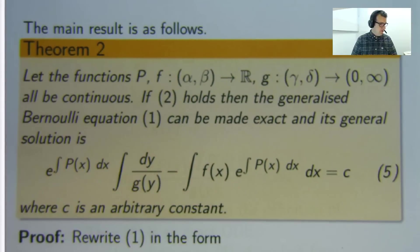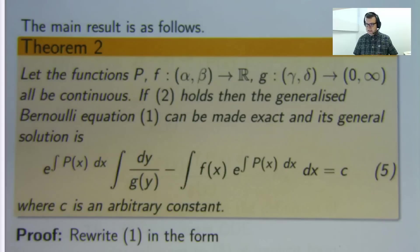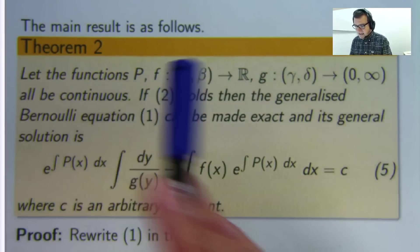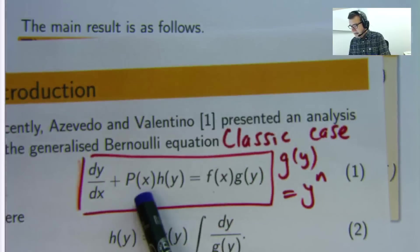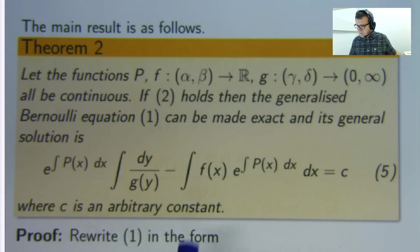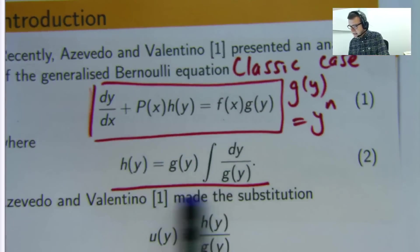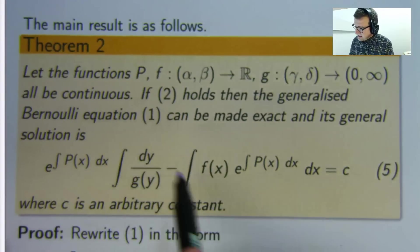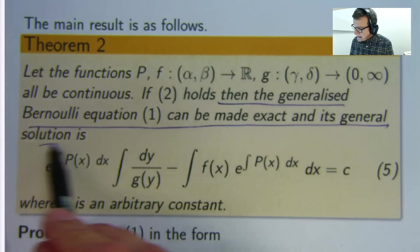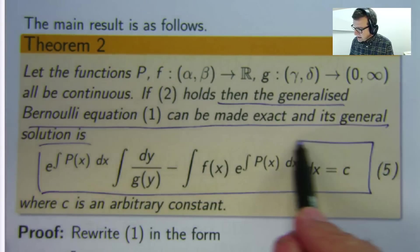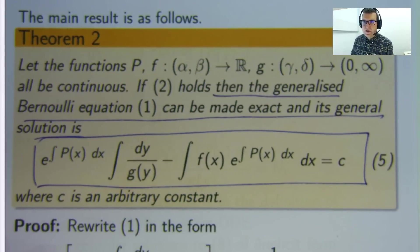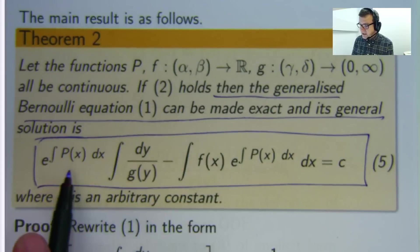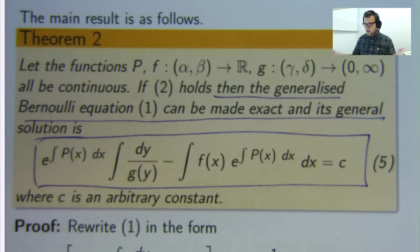This is the main theorem of the paper. Very simple. So you make the standard assumptions like the P and the f in here are continuous, you also make the assumption here. Under those conditions, the generalized Bernoulli equation can be made exact and its general solution is given by this. Now it looks very abstract here, but you know, if you're given a g and an f and an h you can work these things out. So let me step you through it and see how we go.